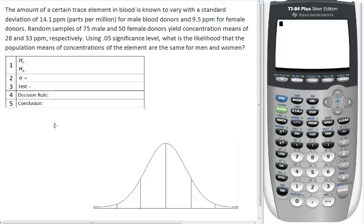Good day students. Today we're looking at a solution to a problem in the series of hypothesis testing. The amount of a certain trace element in blood - trace elements are things found in blood in very small amounts, such as lead, silver, or magnesium - is known to vary with a standard deviation of 14.1 parts per million for male blood donors and 9.5 parts per million for female donors.